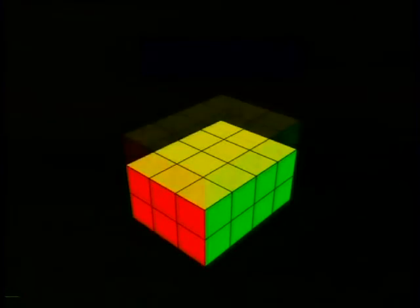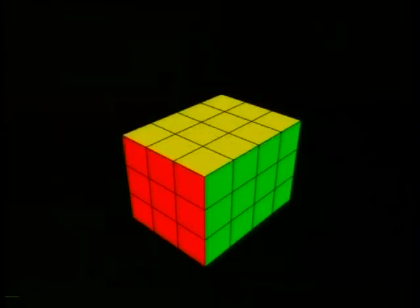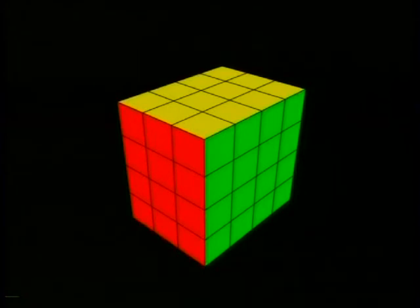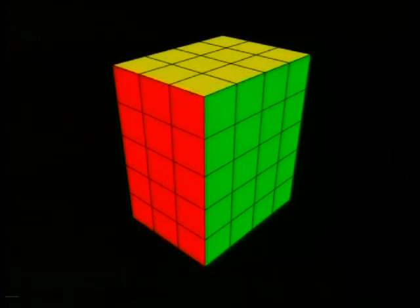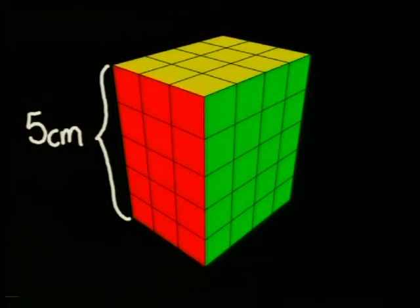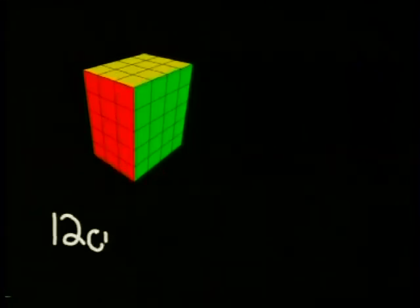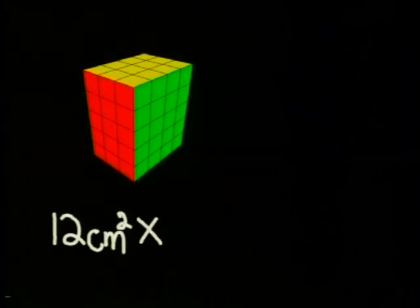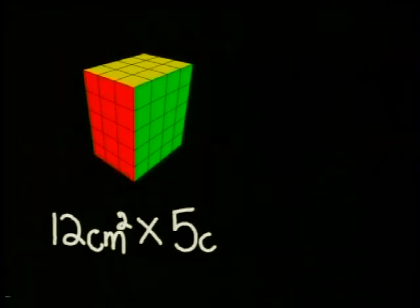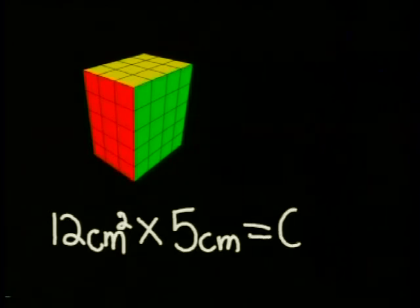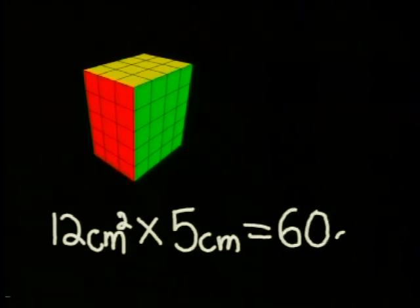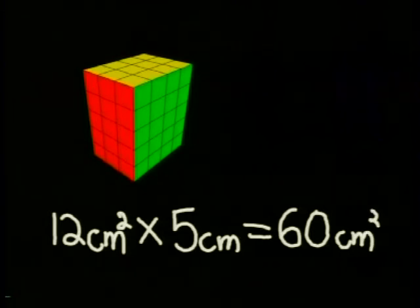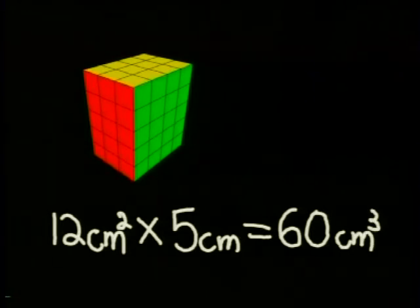Now we stack identical layers of cubes on top of this base until we have our structure five layers high. Since we know that the area of the base is 12 centimeters squared, and we have five layers in total, the quickest thing to do would be to multiply 12 centimeters squared by 5 centimeters. This gives us 60 centimeters cubed, or 60 cubic centimeters.